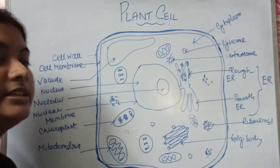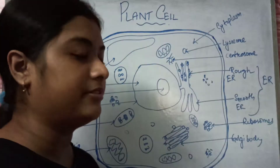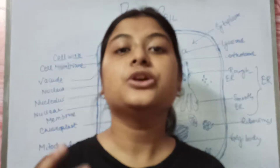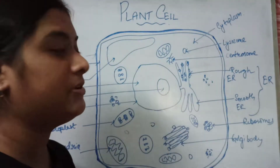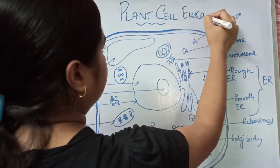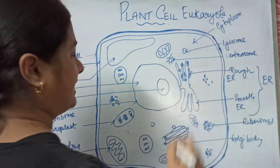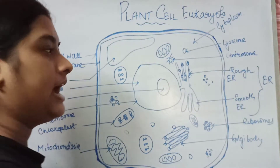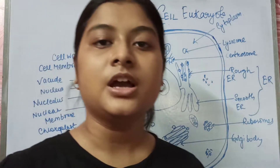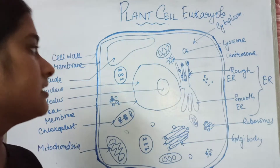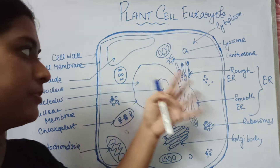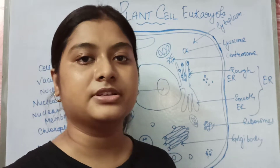So this is how a plant cell looks like. I have drawn the diagram beforehand. A plant cell is a eukaryotic cell, meaning this type of cell is present in plants — they make up the plants. These are the major constituents which I have put here that are present in a plant cell.